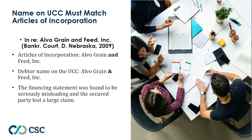The name on the UCC financing statement must match the articles of incorporation. In the court case involving Alvo, Grain, and Feed, Inc., the articles of incorporation listed 'and' spelled out, but the debtor name on the UCC financing statement used an ampersand. As you can see, they are different. As a result, the financing statement was found to be seriously misleading, and the secured party lost a large claim. So the difference between 'and' spelled out and an ampersand is very crucial.